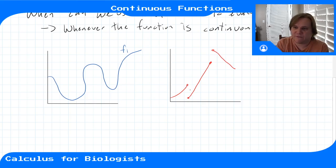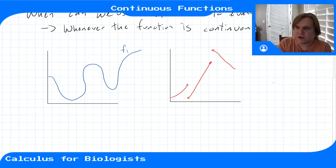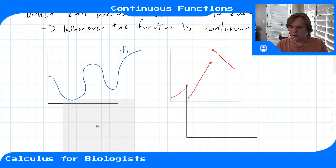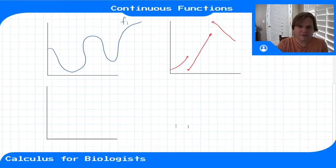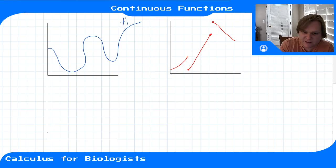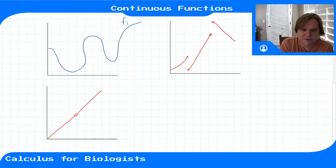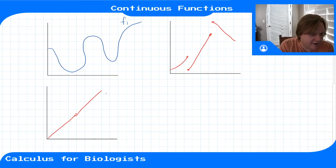At a point where a function is not continuous, the limit from one side would be one value and the limit from the other side would be a different value. Or if I had a function that had a hole in it — like the one we had last week, which was pretty much linear but had a hole at a certain point — this would be discontinuous because that point isn't defined for the function, and I had to pick up my pencil to draw it.